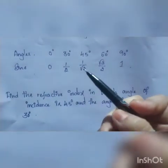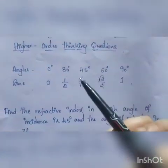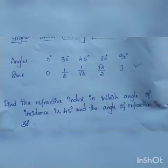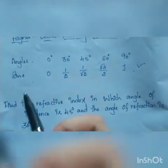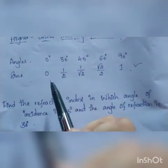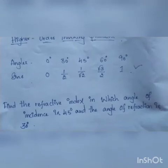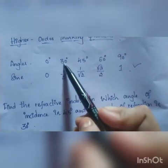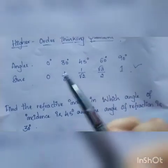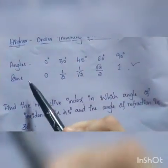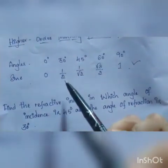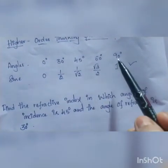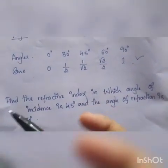Next we will go to higher order thinking questions. Before that, I have listed some angles from your trigonometry chapter in mathematics. You must memorize these values: sin 0° = 0, sin 30° = 1/2, sin 45° = 1/√2, sin 60° = √3/2, and sin 90° = 1. Half the exam questions will be based on these angles.